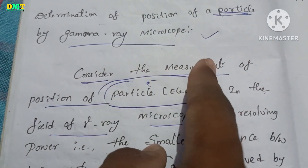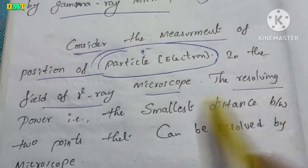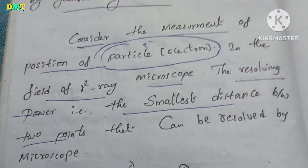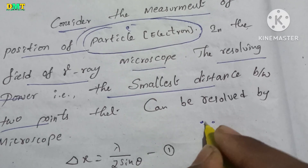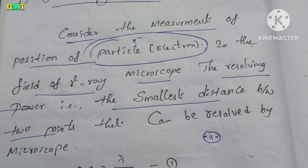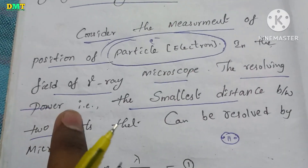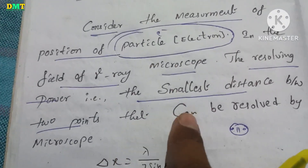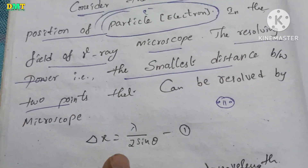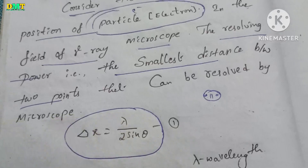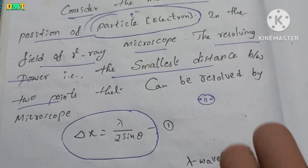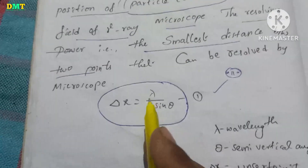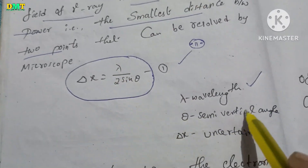Next, the resolving power — the smallest distance between two points that can be resolved by a microscope: delta x is equal to lambda by 2 sin theta. So the resolving power is delta x = lambda / (2 sin theta). Here delta is the wavelength and theta is the semi-vertical angle.